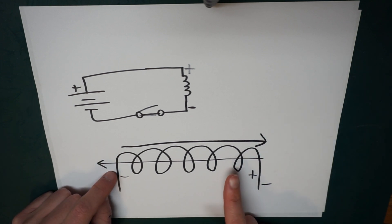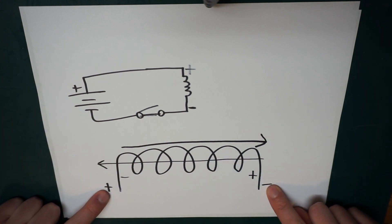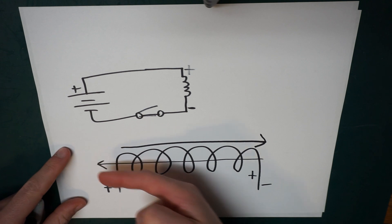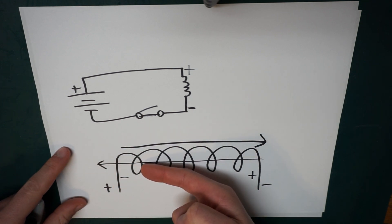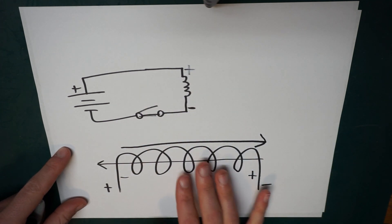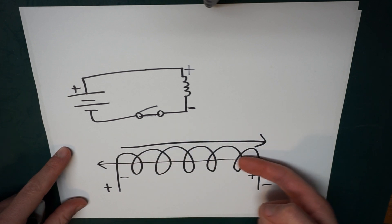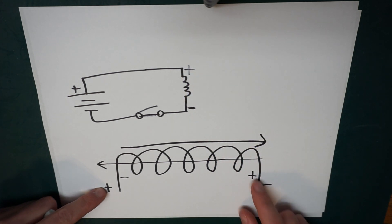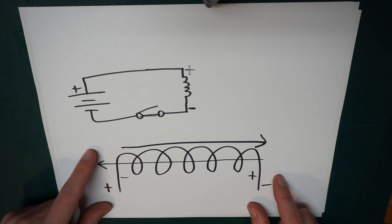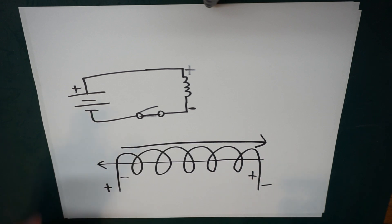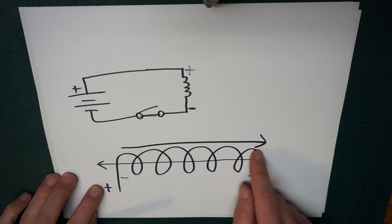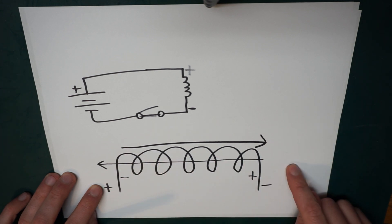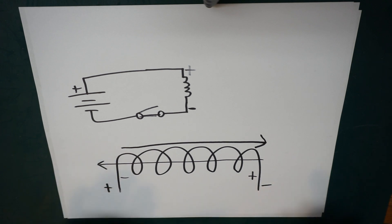So there's a lot going on there. To summarize: the applied voltage produces a magnetic field via the right-hand rule. The inductor wants to maintain its original flux of zero, so it induces an opposing magnetic field. This causes it to produce its own voltage opposing the current, so no current initially flows. Over time, the inductor can no longer sustain as strong an induced magnetic field, it weakens, and eventually current is allowed to flow through the inductor.